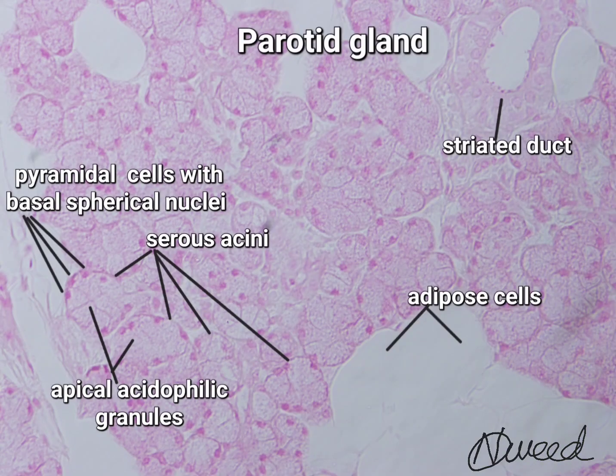The parotid gland is a purely serous gland. The secretory product of the parotid gland is thin and watery, and consists mainly of alpha amylase and proline-rich protein. Myoepithelial cells are found located between the basement membrane and basal plasmalemma of the serous cells.